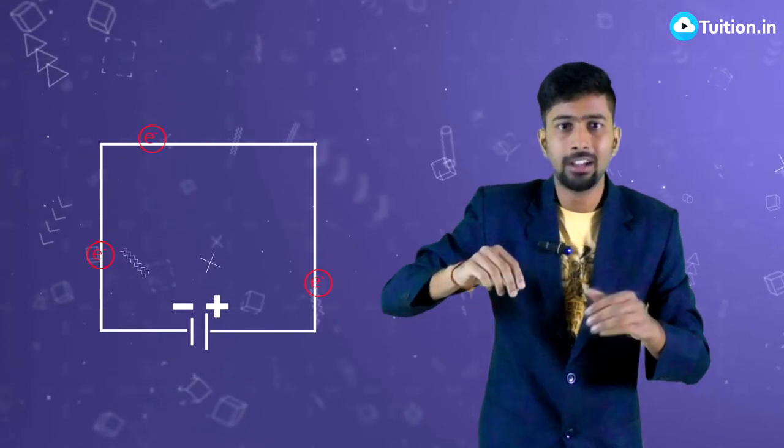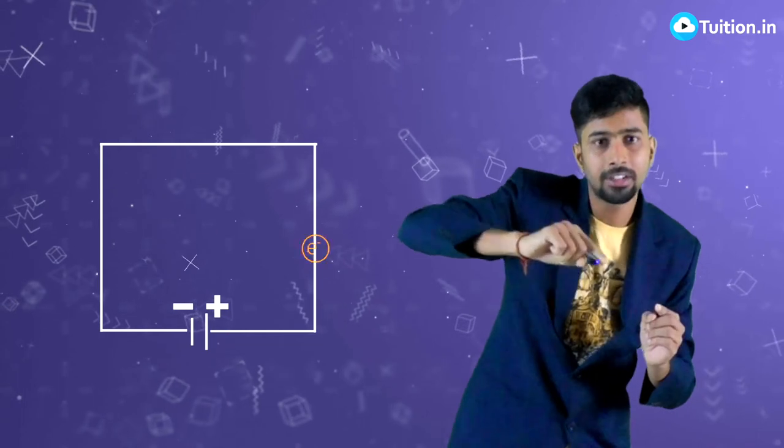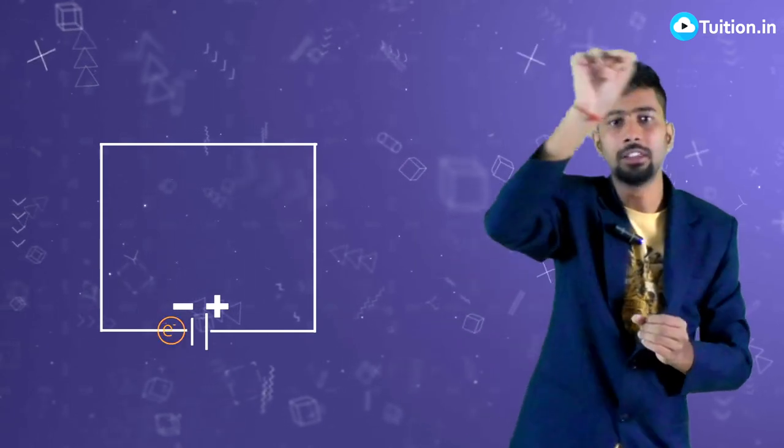So this is how a battery establishes an electric field, keeps running an electron through the wire and keeps doing this work. And in turn, you can say that because electron flows from this direction to this direction, electricity will flow in the opposite direction to the electron. So this is how a battery establishes a current in the wire.